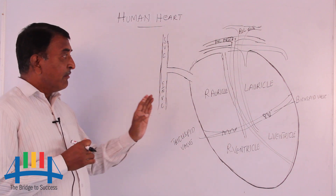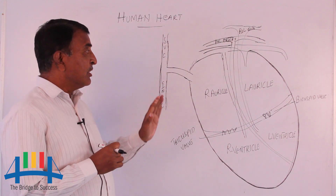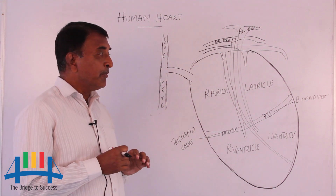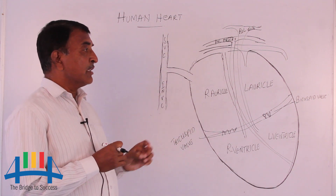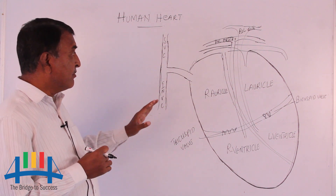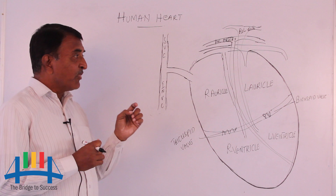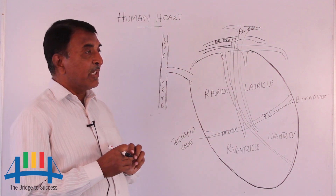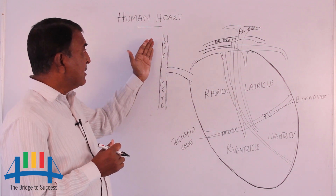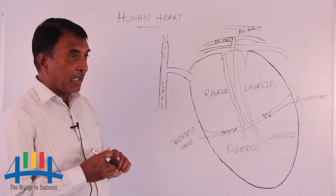Now, once if you observe the heart — how the heart is supplying blood to all parts of the body, and how it is collecting blood from different parts of the body — let us go very deeply into that. There are two types of major blood vessels which are present, called the superior vena cava and inferior vena cava.